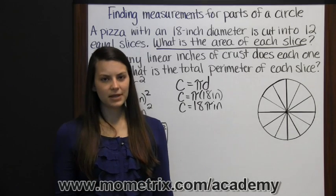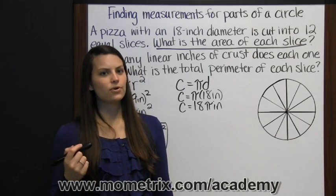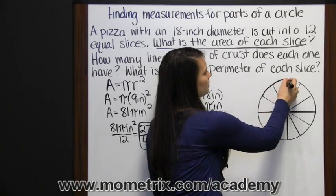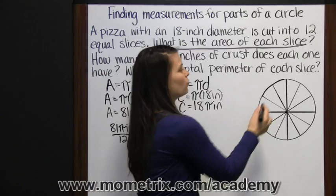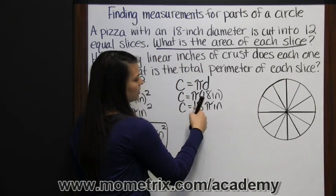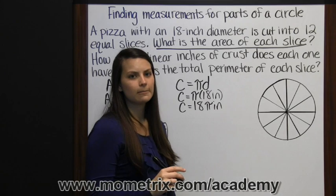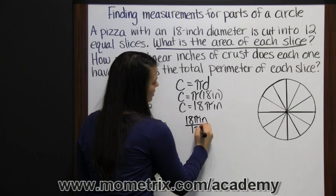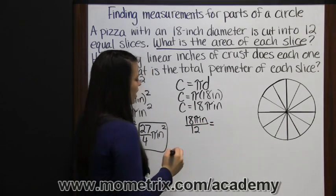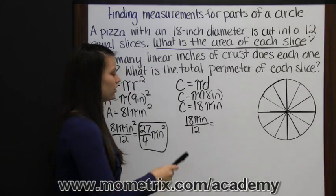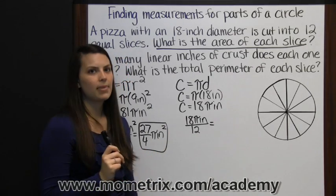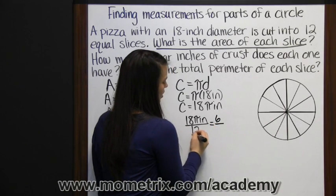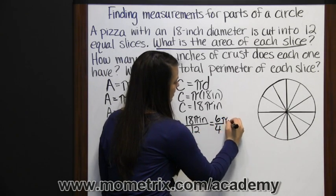But our circumference has been split into 12 equal slices by these 12 pieces of pizza. So if we want to find the linear inches of crust one slice has, then we take our linear inches of crust for the whole pizza and divide it by 12. So that's 18 pi inches divided by 12. And that can be simplified. We can divide our numerator and our denominator by 3. 18 divided by 3 is 6. And 12 divided by 3 is 4. So 6 fourths pi inches.